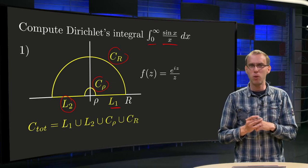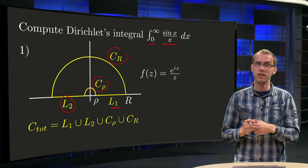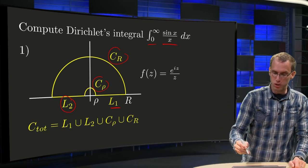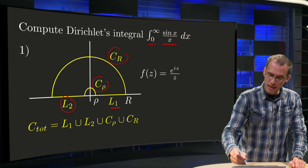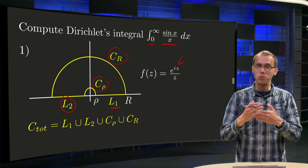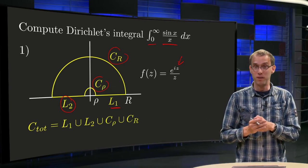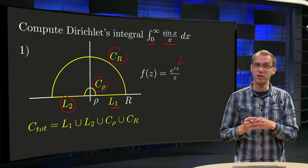And that is a bit odd because we don't need the part from 0 to minus infinity, but we will also choose as our f(z) e to the power iz over z. So those two together, the inclusion of L2 and the choice of f(z), will give us our sine.